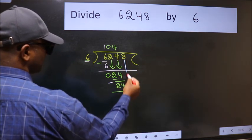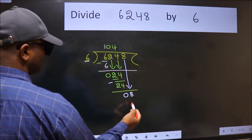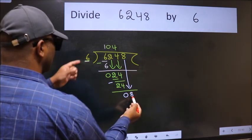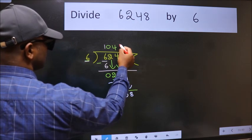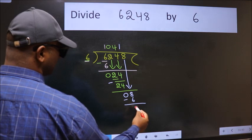After this, bring down the beside number. So, 8 down. A number close to 8 in the 6 table is 6 once is 6. Now, we subtract. We get 2.